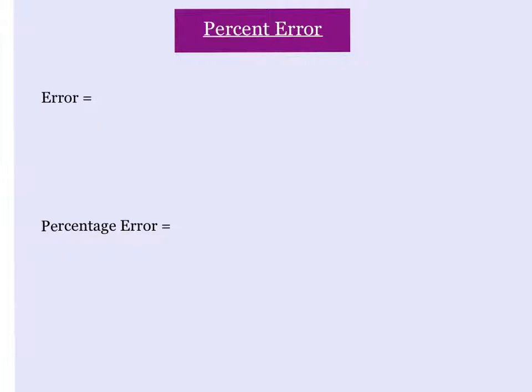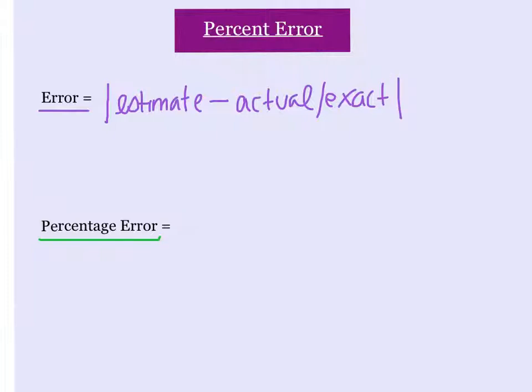In order to find percent error, we have two things we need to first solve for. We need to find our error, and once we find the error, we plug it into the percentage error equation. Error is the absolute value of your estimate minus the actual or exact. The absolute value ensures this is always positive because we never want a negative percentage. The absolute value of a number is how far away from the origin it is, not whether it's positive or negative.